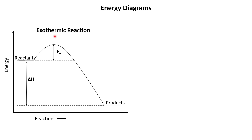Here is my diagram for an exothermic reaction. On the x-axis, we have the reaction proceeding from reactants to products. On the y-axis, we are simply measuring energy. In an exothermic reaction, your reactants start at a higher energy than your products. The difference between reactants and products is your change in enthalpy, delta H. For the reaction to proceed, you have to get over this energy hump — this is called activation energy.